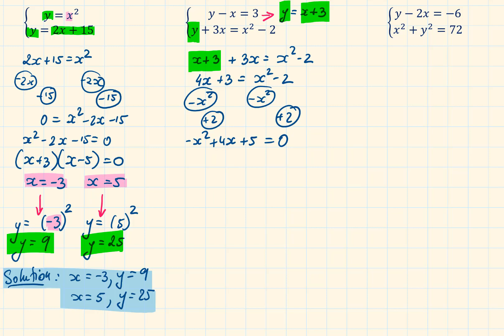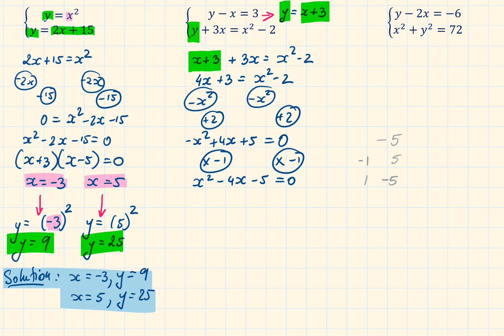I'm going to subtract x squared from both sides and add 2 to both sides to get rid of the right-hand side terms. As I prefer the x squared term to be positive, we are going to multiply everything by minus 1. Now we can check if it factorizes — if it doesn't, we would have to use the quadratic formula or completing the square. We can write down the factors of minus 5: since 5 is prime, the pairs are minus 1 and 5, and 1 and minus 5. We choose the pair that adds to minus 4, so we factorize this as x plus 1 and x minus 5 equals 0.